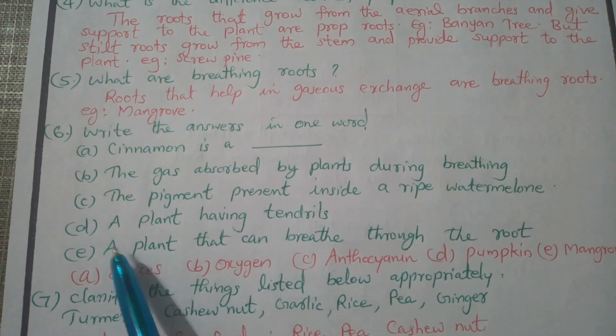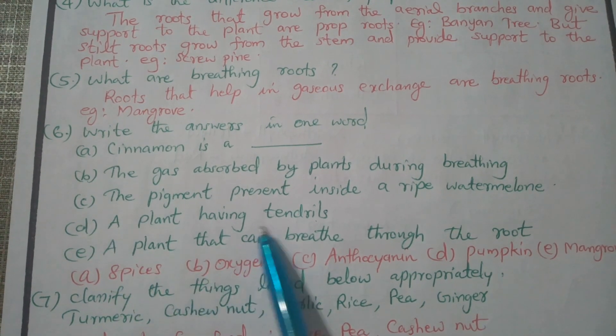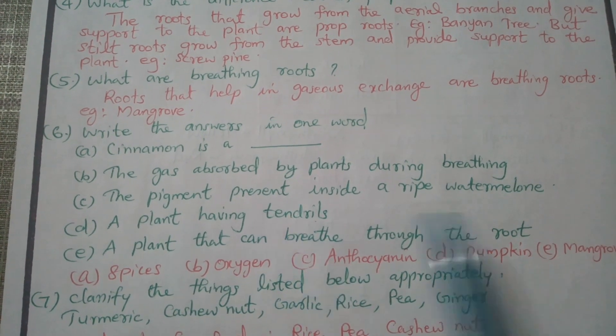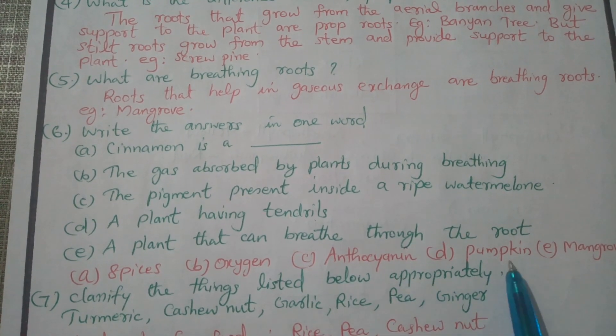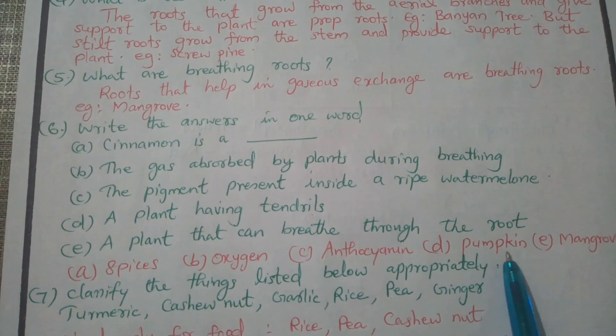The pigment in watermelon is cyanin. A plant having tendrils — the answer is pumpkin.